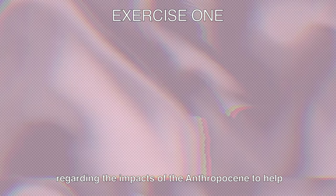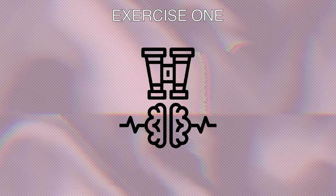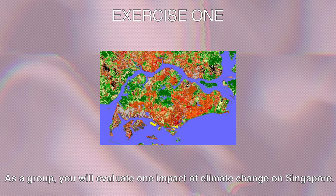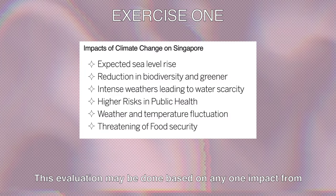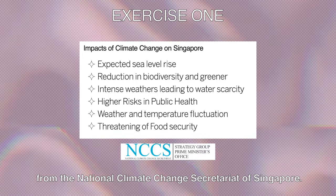In Exercise 1, we will scan for secondary materials regarding the impacts of the Anthropocene to help aid in the process of imagining futures later on. As a group, you will evaluate one impact of climate change on Singapore. This evaluation may be done based on any one impact from the chart that is pinned on your desk, which is sourced directly from the National Climate Change Secretariat of Singapore.